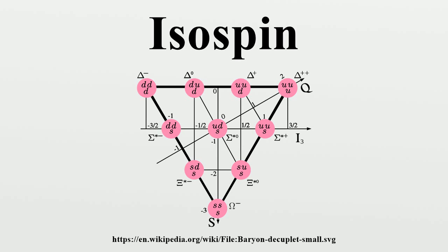In quantum mechanics, when a Hamiltonian has a symmetry, that symmetry manifests itself through a set of states that have the same energy — that is, the states are degenerate. In particle physics, the near-mass degeneracy of the neutron and proton points to an approximate symmetry of the Hamiltonian describing the strong interactions. The neutron does have a slightly higher mass due to isospin breaking, caused by the difference in the masses of the up and down quarks and the effects of the electromagnetic interaction. However, the appearance of an approximate symmetry is still useful, since the small breakings can be described by perturbation theory.